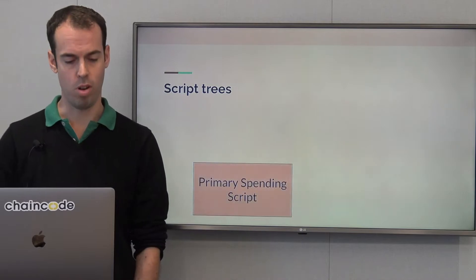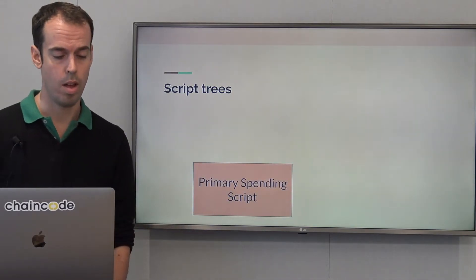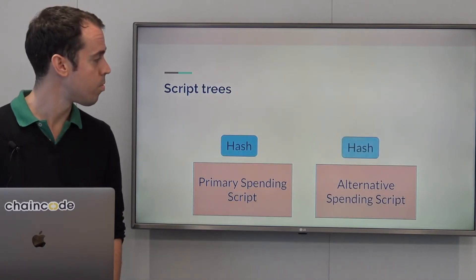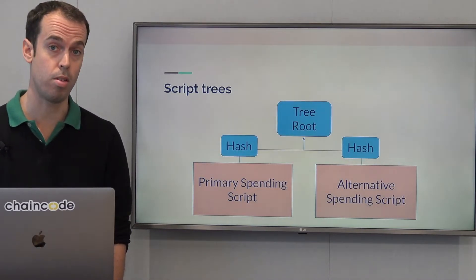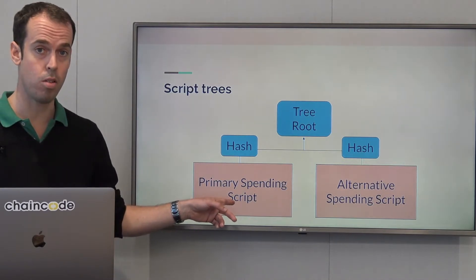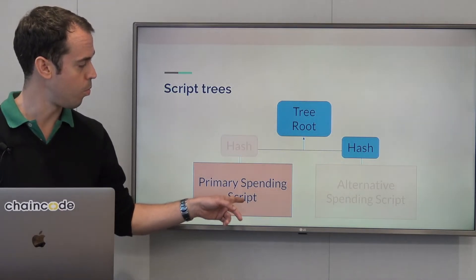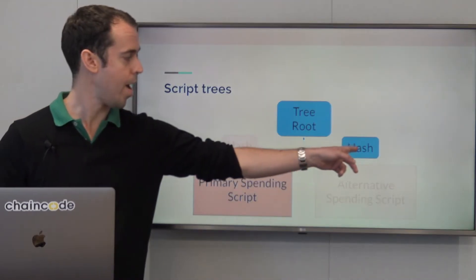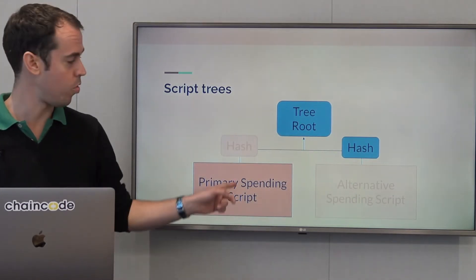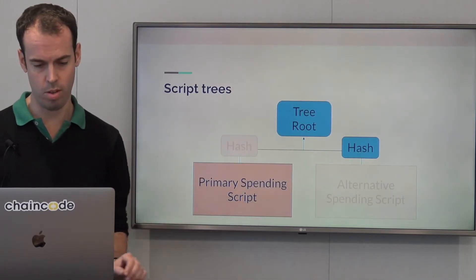Taproot allows script trees, which means we can have multiple scripts and place them in a Merkle tree, just like transactions in a block are placed in a Merkle tree. And if we spend that transaction with the primary spending script, we simply provide a Merkle proof, which consists of that script and the hash of the alternate script, and that's enough to prove that this was in the tree.